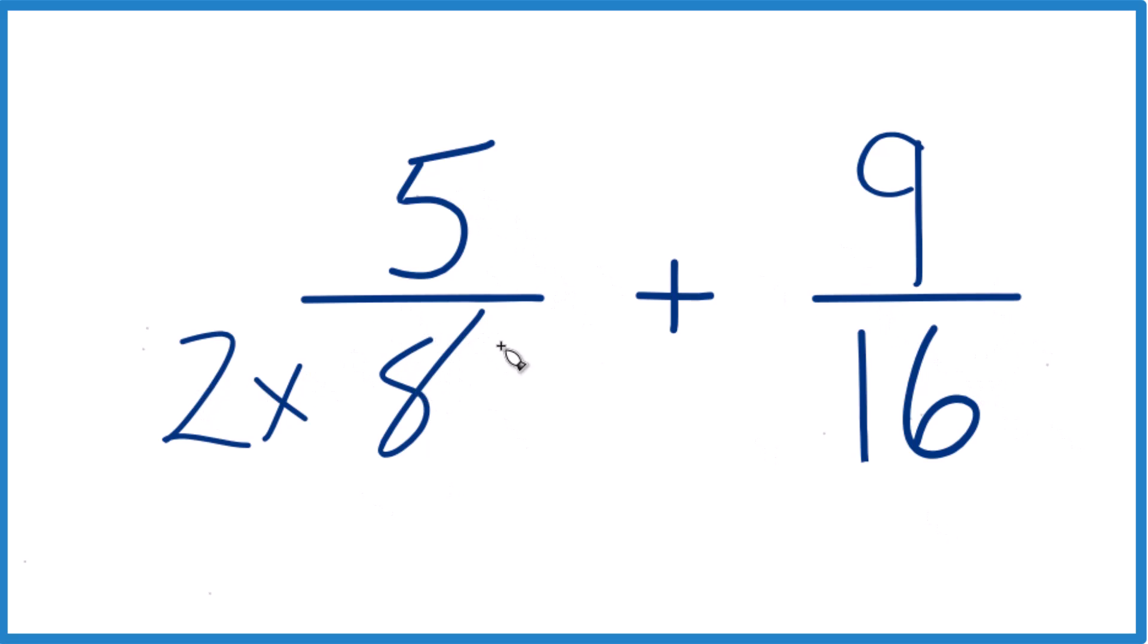But we can't just multiply the denominator by a number. We also need to multiply the numerator by that number. In this case, 2 divided by 2, that equals 1. So we're just multiplying by 1. We don't change the value, just the way it's represented.